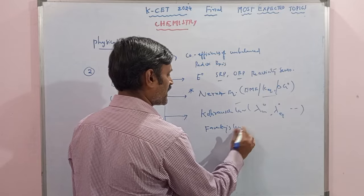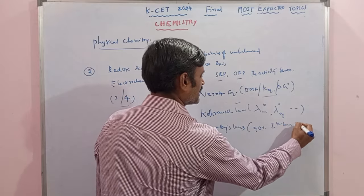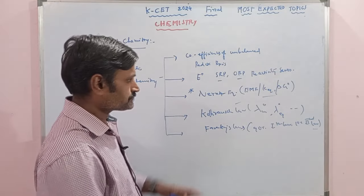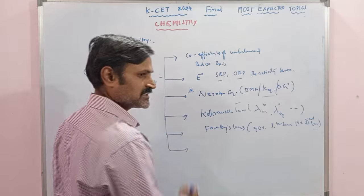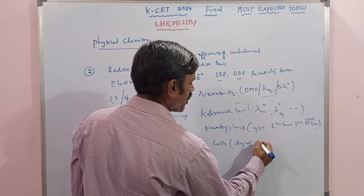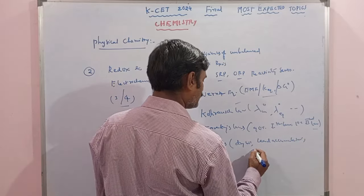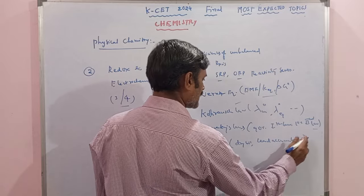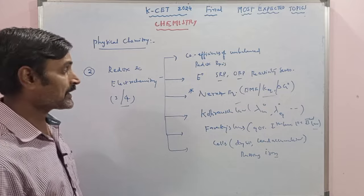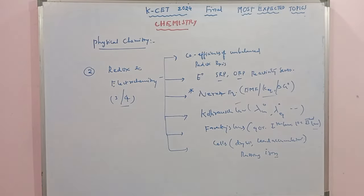Any problem on Faraday's laws — first law and second law — 90% the question comes from Faraday's first law, and 10 to 20% from Faraday's second law. In addition, there are questions from cells — dry cell related equations, lead accumulator, secondary cells, mercury cell, and addition to rusting of iron equation. Rusting of iron can also be asked. From redox and electrochemistry, three to four questions — 100% guarantee.